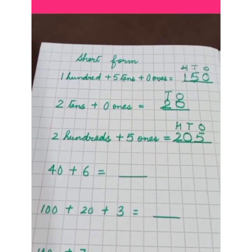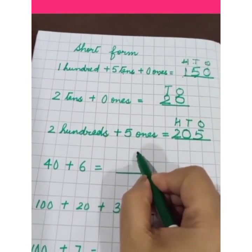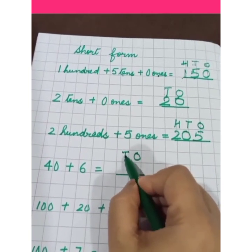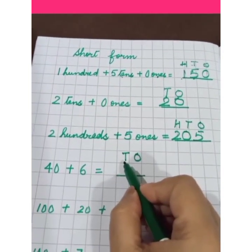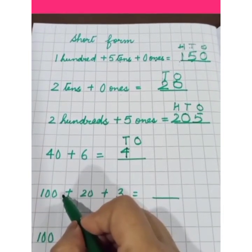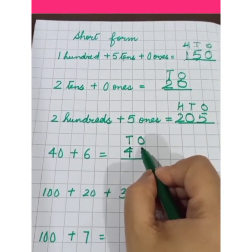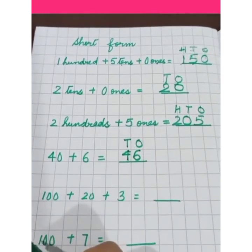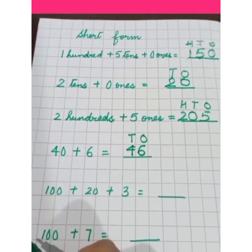40, 40 means 4 tens, make column of ones and tens. 40 is 4 tens, so 4 in the place of tens and 6 in the place of ones, 40 plus 6, 46.